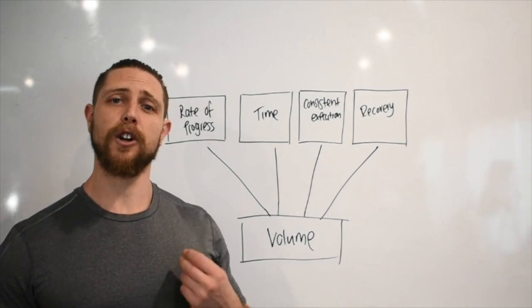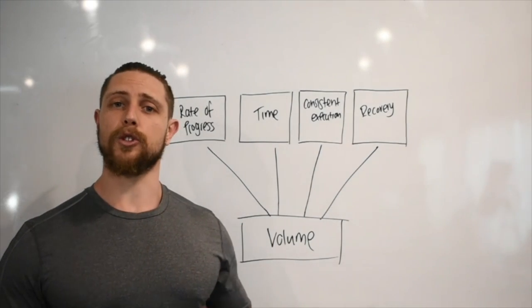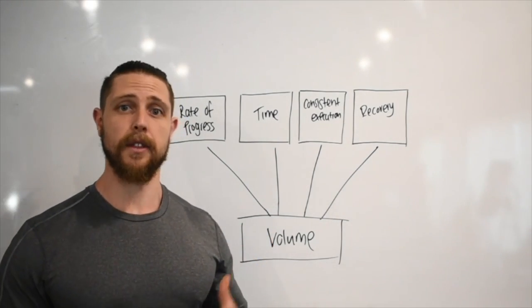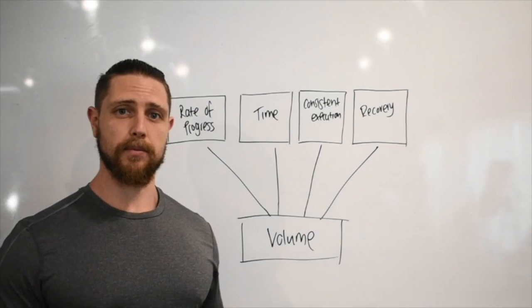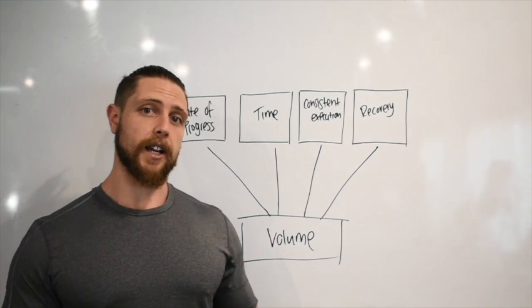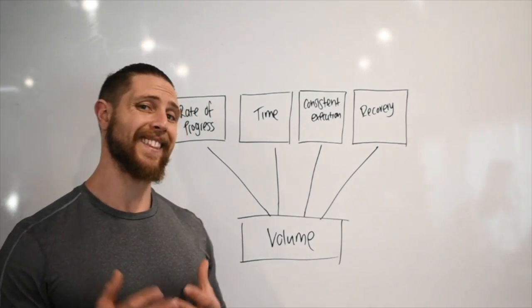As you become more and more advanced, that rate of progress is going to slow down significantly. You might only see improvements in your strength, your repetition strength, every month, every second month, third month, every six months. It really comes to a grinding halt, which can be quite frustrating, and that's when you might need to add in more volume to fast-track your gains.